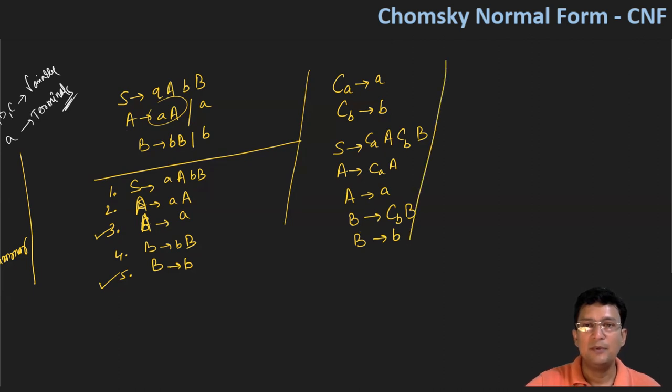Okay, so now our problematic productions, or such productions that we have to change to CNF, which ones are they? We have numbered this again as one, two, three, four and five. In addition to this, six and seven are two new productions we have taken because these a and b symbols need to be generated.